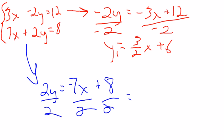And that gives me y equals negative 7 over 2x plus 4. I'm going to let that be y2 in my y equals screen.